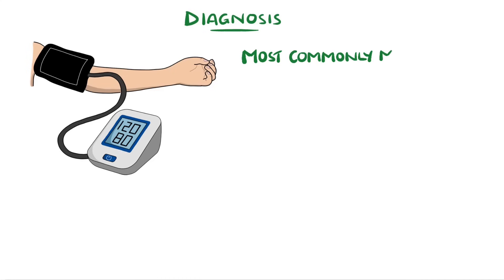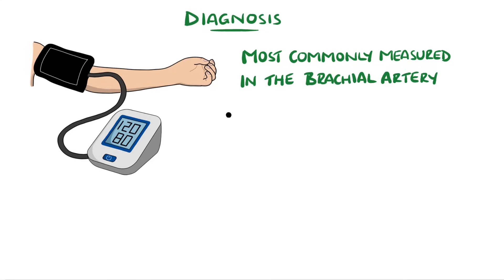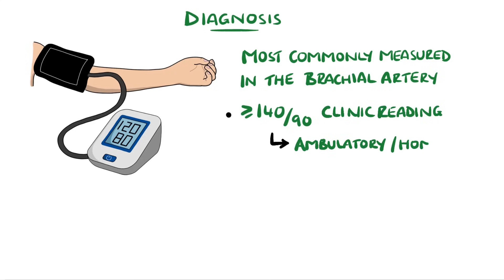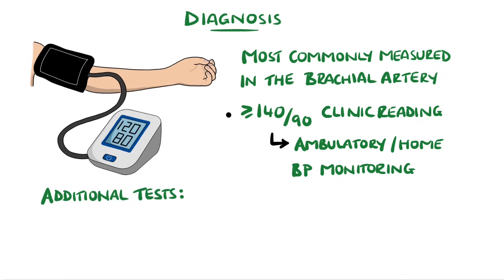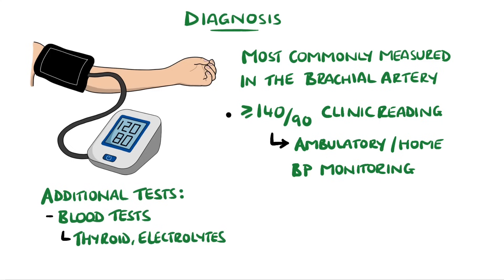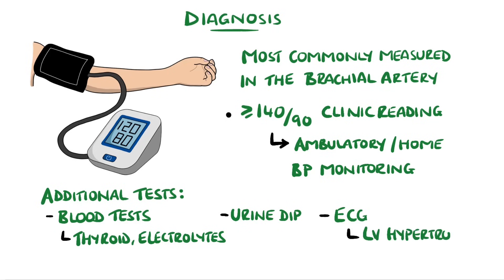Blood pressure is normally measured in the brachial artery, and if the level is above 140 over 90 in the clinic, then the patient undergoes ambulatory or home blood pressure monitoring, as the raised clinic reading may be due to white coat syndrome. Additional tests may be done, such as blood tests looking at thyroid levels, electrolytes and creatinine, a urine dip looking for evidence of blood, and an ECG which may show signs of left ventricular hypertrophy.